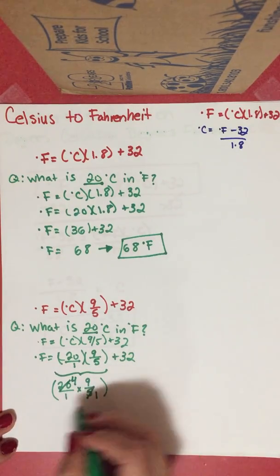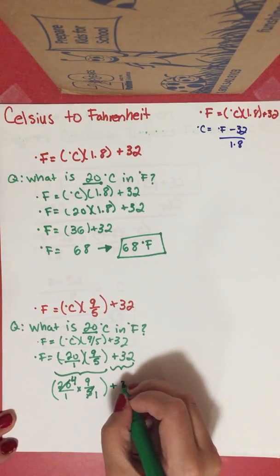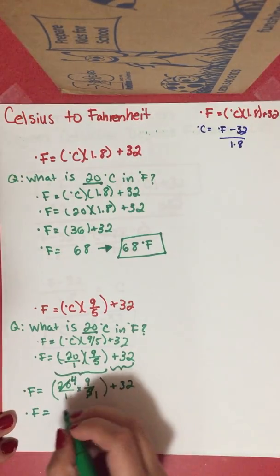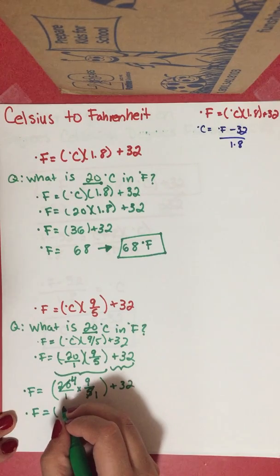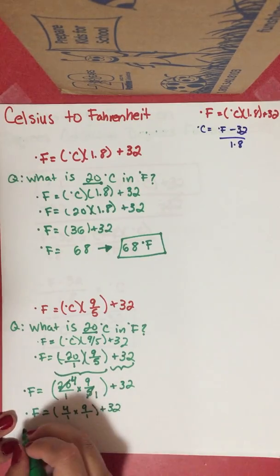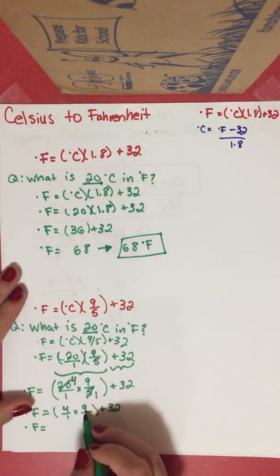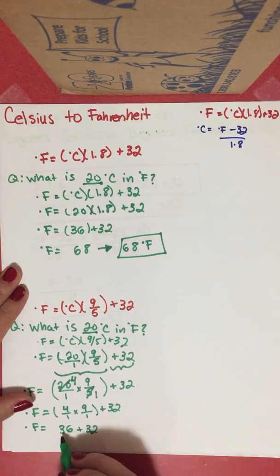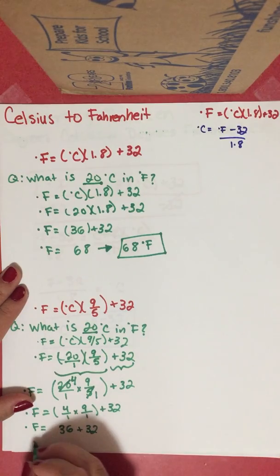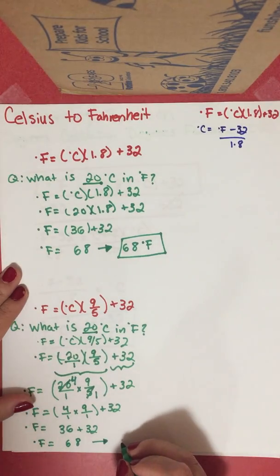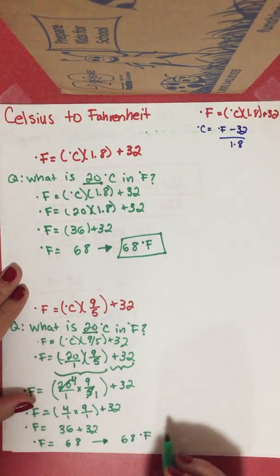Bringing down the 32, degrees Fahrenheit equals 4 over 1 times 9 over 1 plus 32. 4 times 9 is 36, and since it's over 1 it's a whole number. 36 plus 32 equals 68, leaving us with a final answer of 68 degrees Fahrenheit — same as the decimal method.